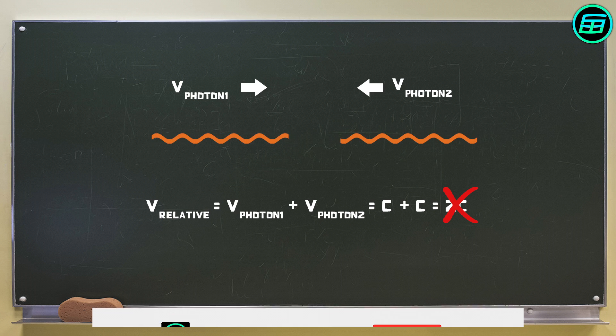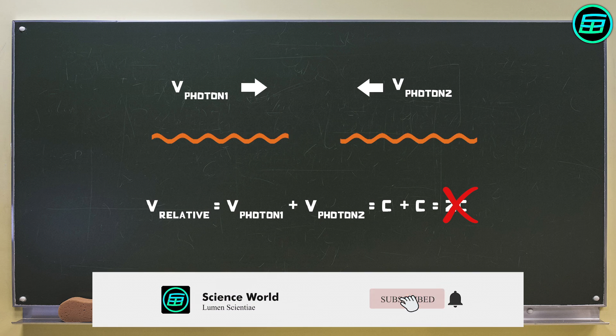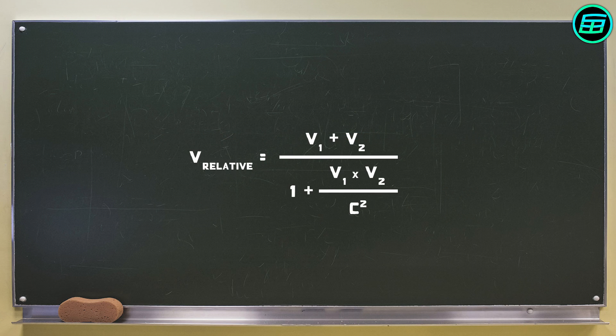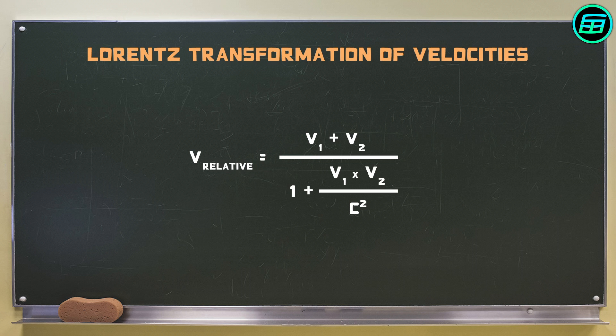To find the relative velocity of objects that are moving at significant fractions of the speed of light, we have to use this formula, known as the Lorentz transformation of velocities.